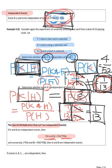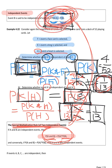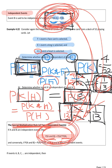Because we can derive the special multiplication rule from the definition of independence. So either way, you can check this one or that one — we can show if they are independent or not.